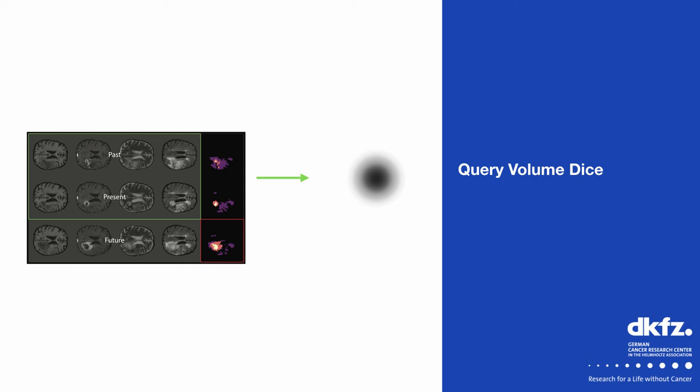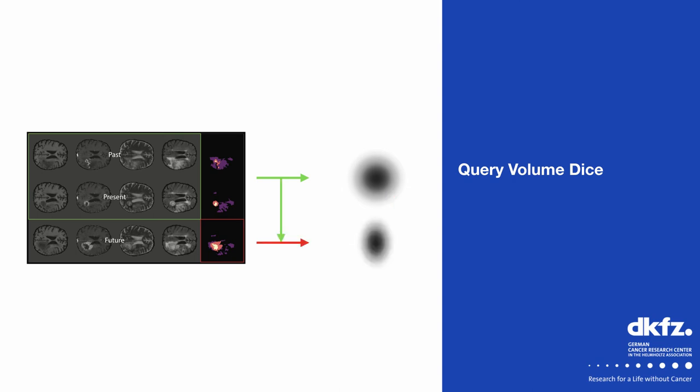For query volume Dice, we sweep the predicted distribution and take the sample that best matches the observed segmentation in size, then compute their Dice similarity. The second measure uses the posterior encoder from training and measures the KL divergence between the prior and the posterior — we call that the 'surprise,' because it gives an idea of how much the model has to adjust the prior to account for the observed segmentation. Unfortunately, these metrics don't really apply to the diffusion growth models mentioned earlier, so we need another frame of reference.